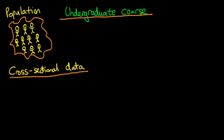In this video I want to provide a description of the syllabus which we're going to cover in the undergraduate course. At the back of our minds within the undergraduate course, and actually at the graduate level as well, the idea is that there is some population, and within that population there might be countries, there might be individuals, there might be firms, and the idea is that we don't actually have the whole population data set.